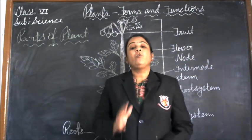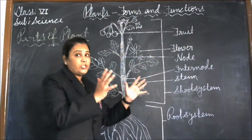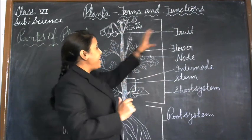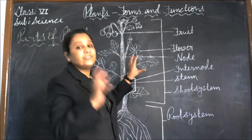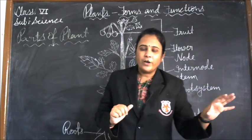The stem holds the leaves in such a way so that they get plenty of sunlight that is necessary for the process of photosynthesis.